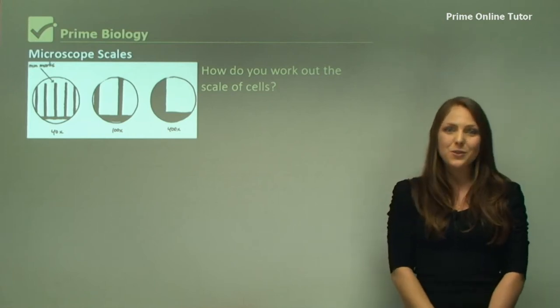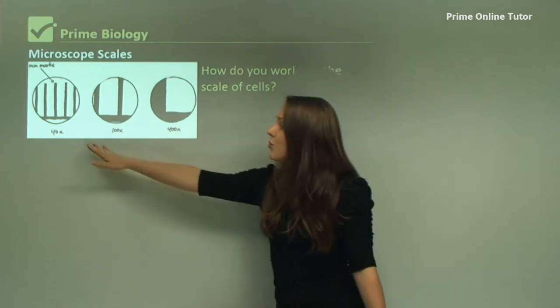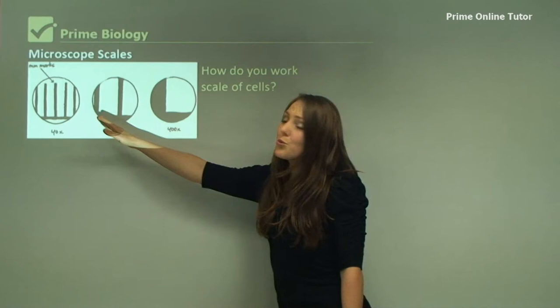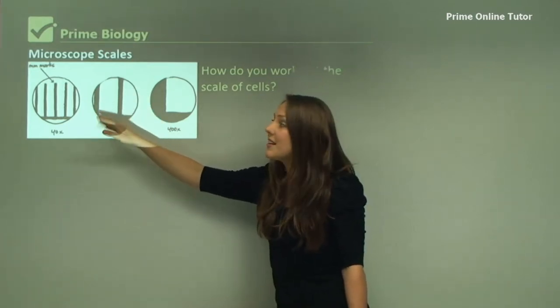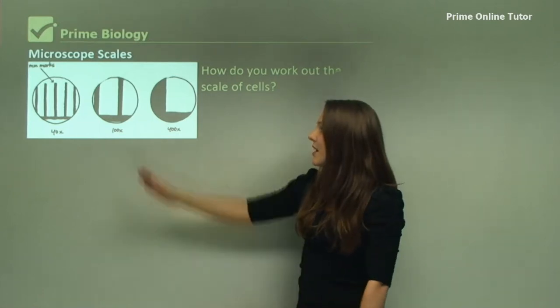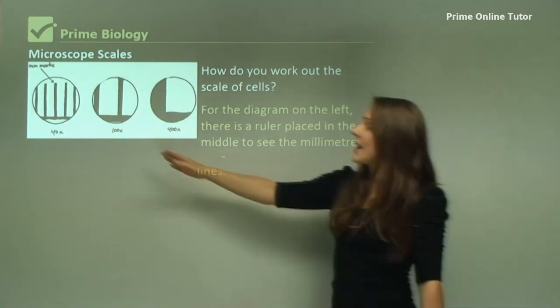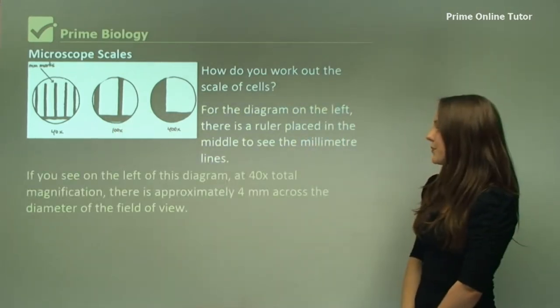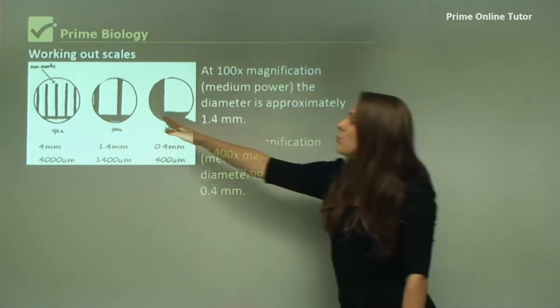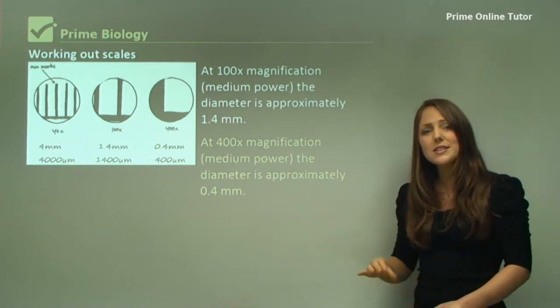How do you work out the scale of cells? I want you to imagine we're putting a ruler underneath the microscope. For the smallest magnification, there is a ruler, and you can see each millimeter. This diameter is actually 4mm across approximately. This next one here, at 100x magnification, the ruler is about 1.4mm across. And at 400x magnification, your ruler is 0.4mm across. In science, we don't say millimeters.